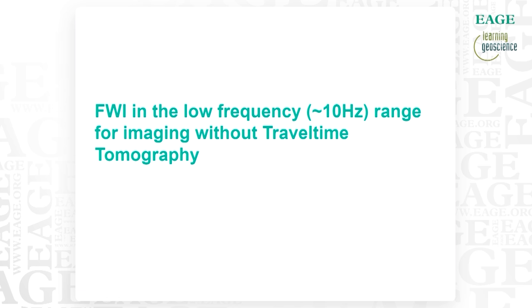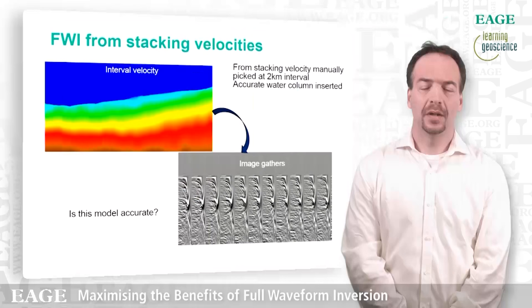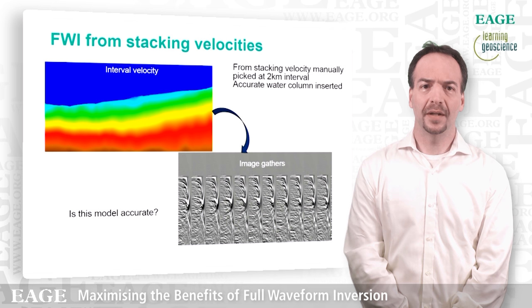Let's start with FWI in the low-frequency range for imaging but without travel time tomography. Here we derive the starting velocity just by a coarse manual picking of stacking velocity at 2 km intervals. We then inserted an accurate water column to start the FWI. When we migrate the data with this velocity, you can see that the gather is far from being flat. So this model is not really accurate for imaging, and often that turns people off by the idea of using this kind of model for FWI.